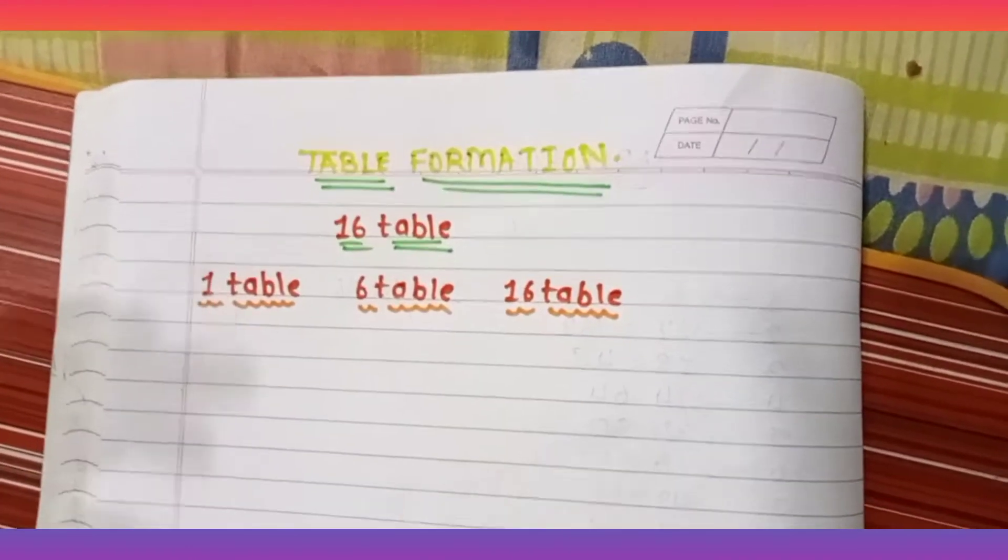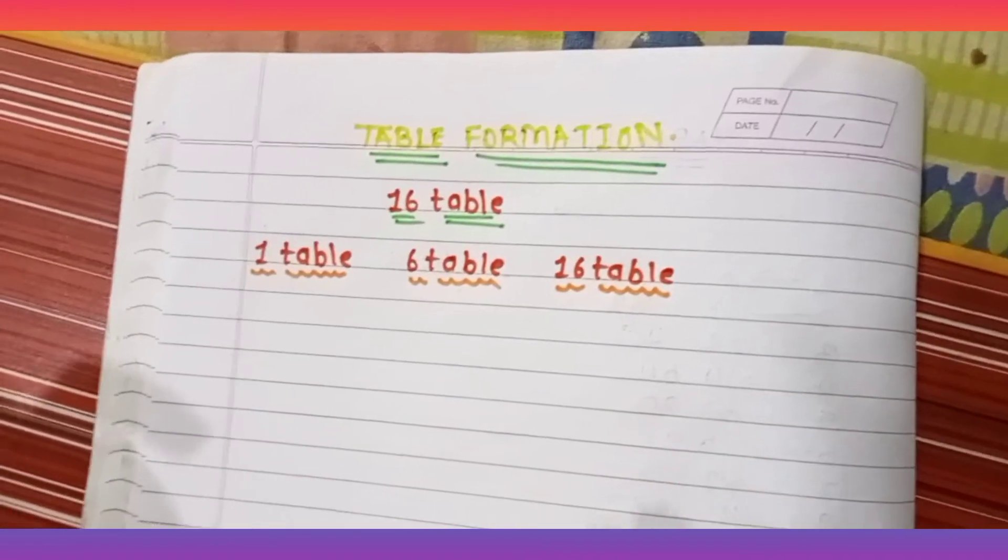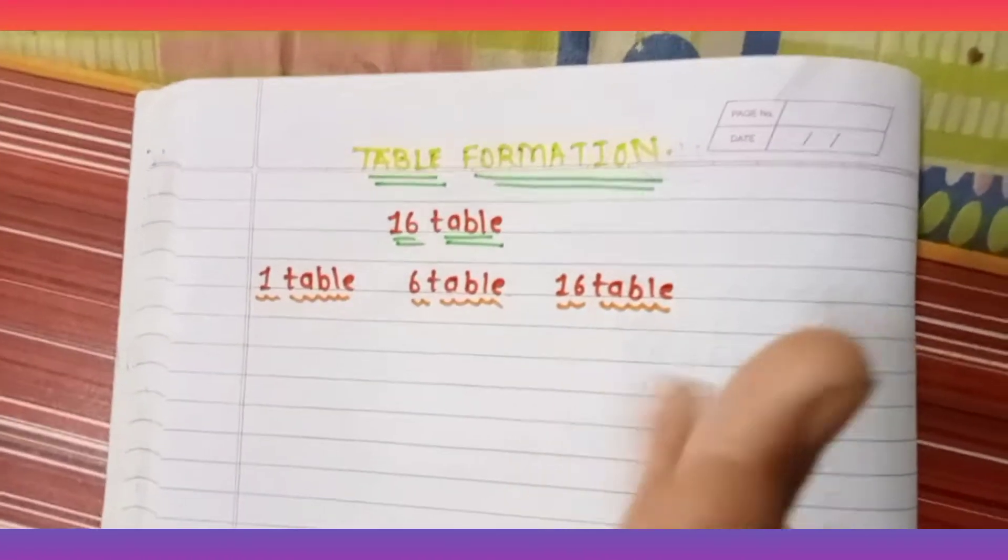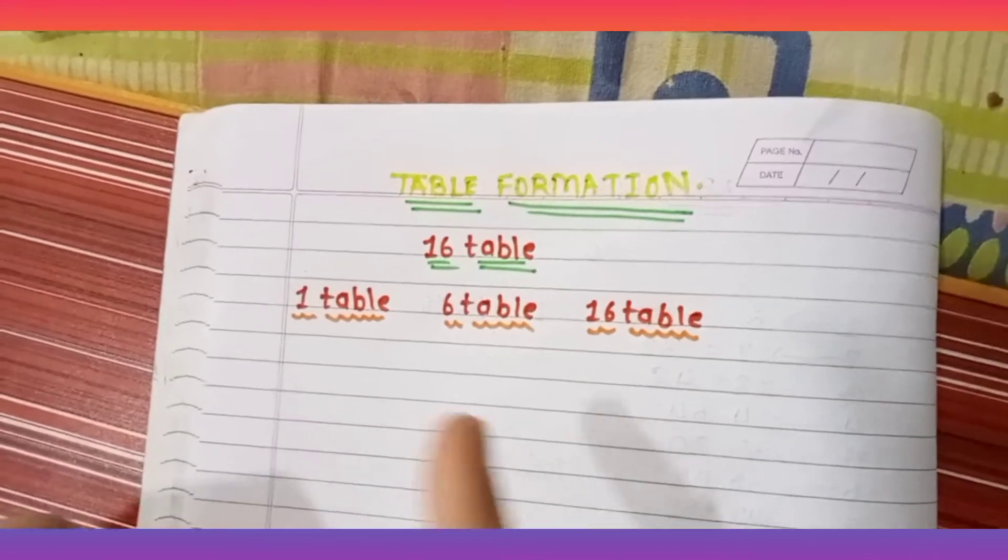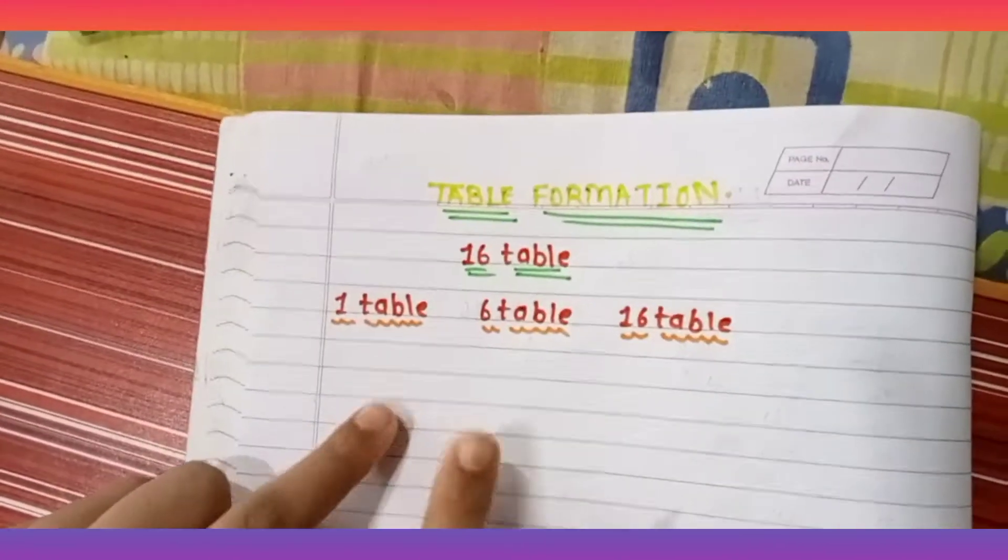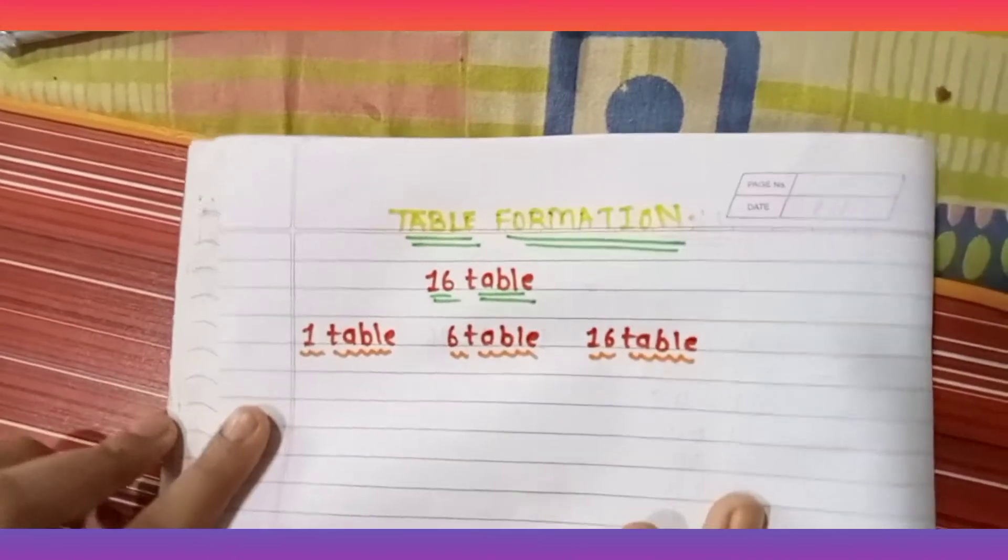For making table formation, first of all you have to learn tables. Don't expect me from 1 to 100, just learn till 9, 1 to 9, or you can learn till 10 or 12, but I am telling you to learn only till 1 to 9.